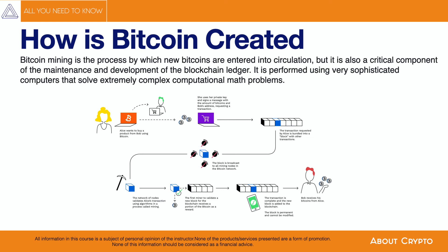The network of nodes validates Alice's transaction using an algorithm in a process called mining, as already mentioned. The first miner to validate a new block for the blockchain receives a portion of the Bitcoin as a reward. The transaction is complete and the new block is added to the blockchain. The block is permanent and cannot be modified. After that, Bob receives his bitcoins from Alice.